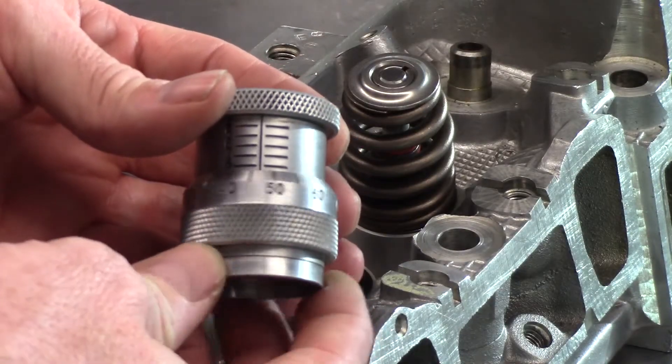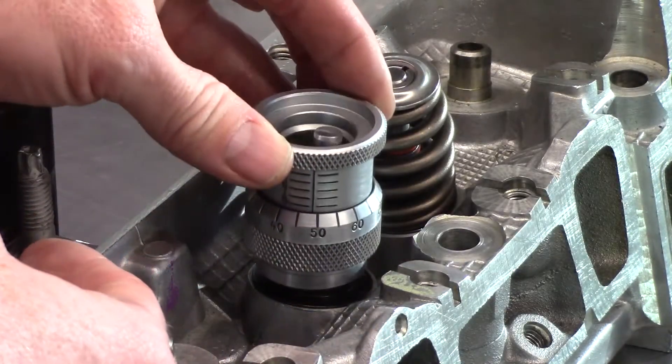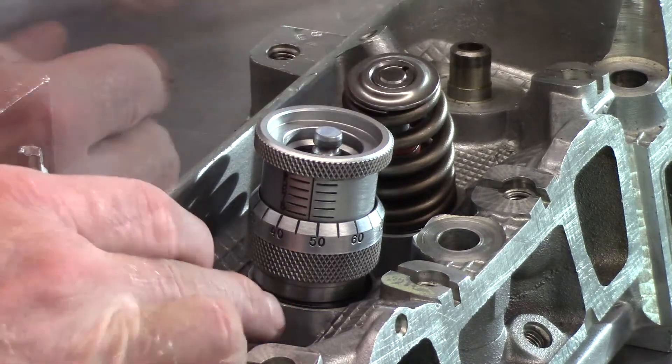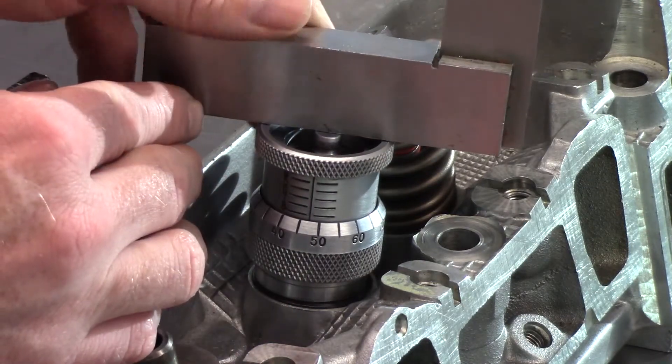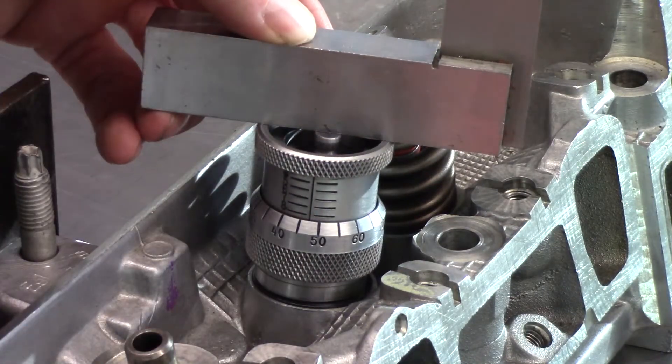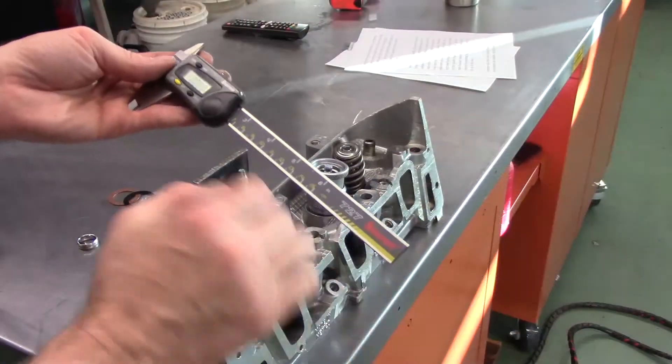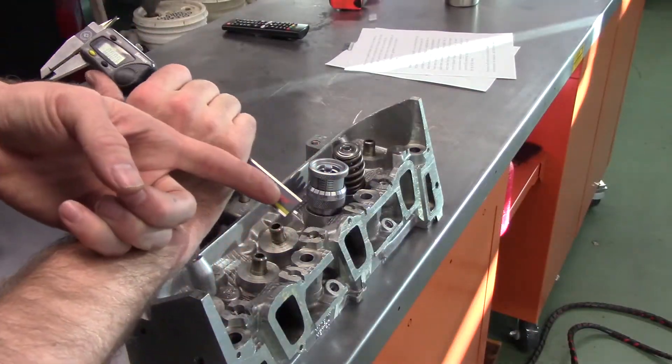Purpose built valve stem installed height micrometers are available, but often not readily available in most shops. An acceptable alternative would be to use the depth measuring blade on a vernier caliper.